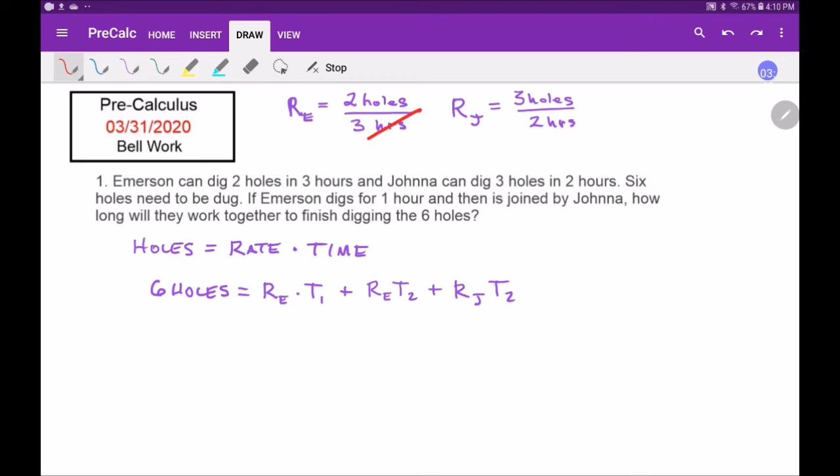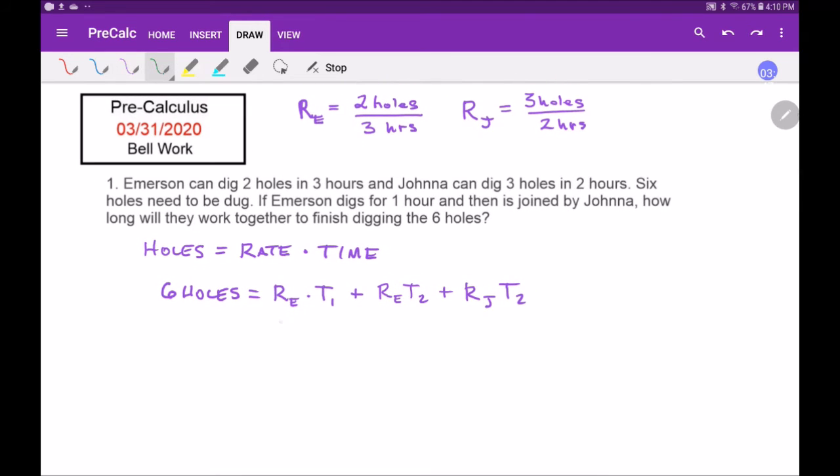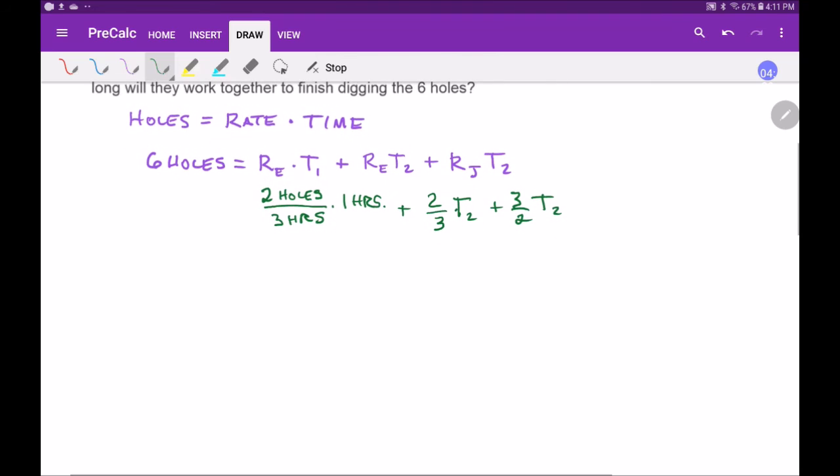So let's plug in some things. The rate of Emerson is two holes per three hours, and it's going to be one hour, plus the rate of Emerson again is two over three times t sub two, plus three over two times t sub two.